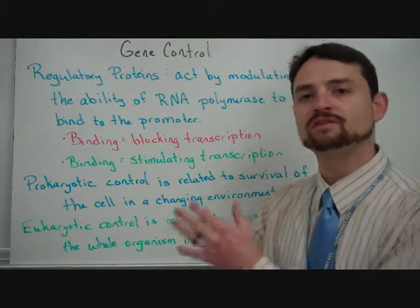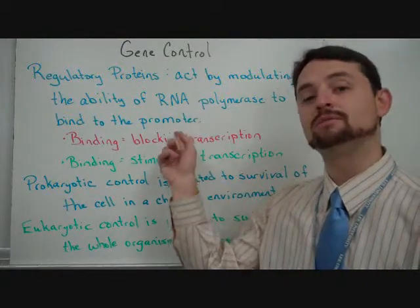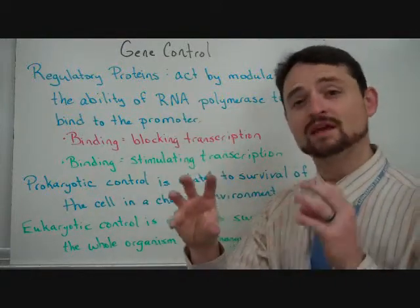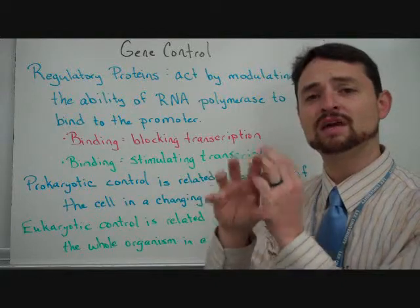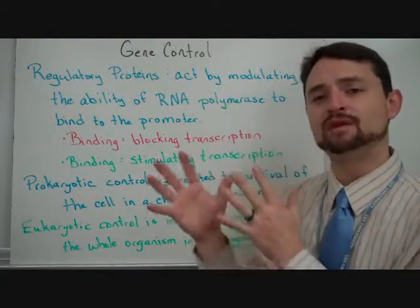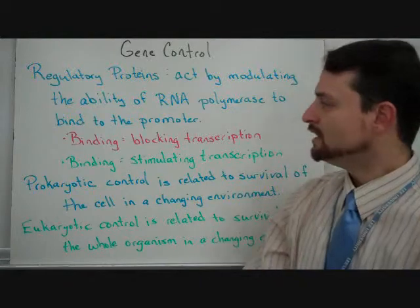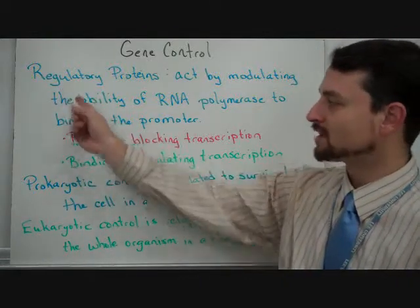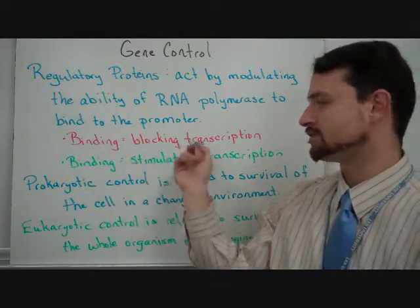Regulatory proteins act by modulating the ability of RNA polymerase to bind to the promoter. Some of these regulatory proteins, RNA polymerase will be bound to the promoter, but they'll kind of be in the way to prevent that from happening. Others will mess up the ability for RNA polymerase to bind. So this binding of regulatory proteins could block transcription.